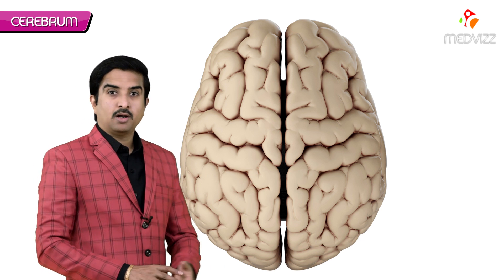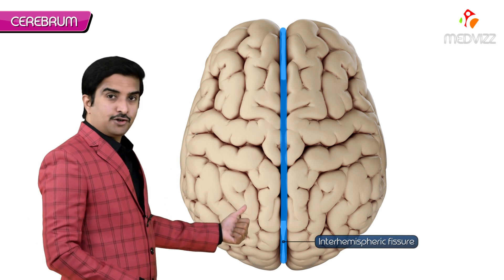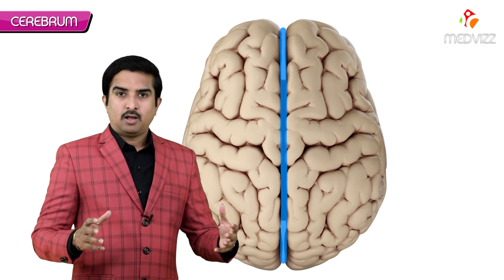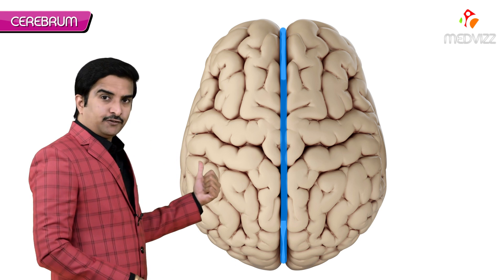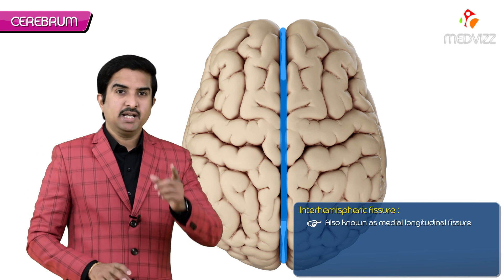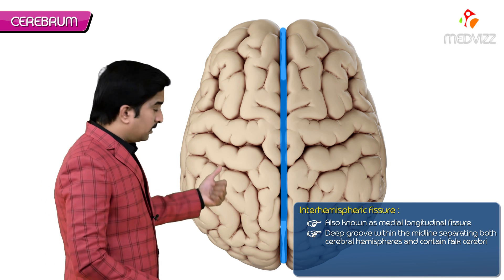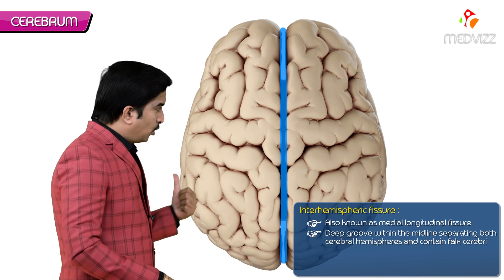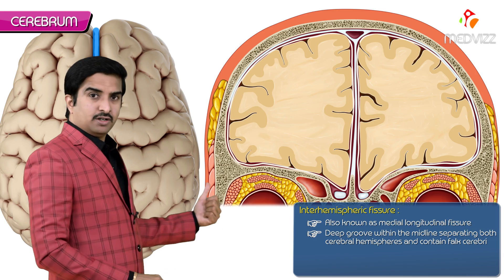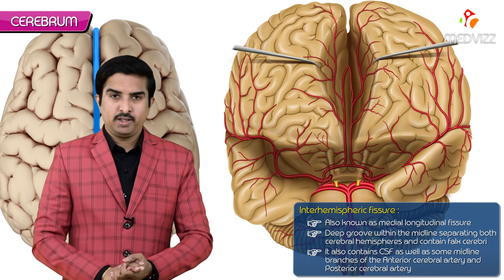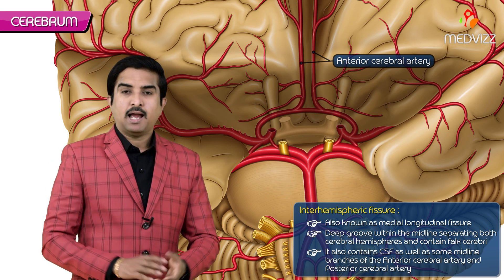The two cerebral hemispheres are divided in the mid-sagittal plane by the interhemispheric fissure, together filling almost the entire volume of the cranial cavity. This interhemispheric fissure is also known as the medial longitudinal fissure — a deep groove in the midline separating both cerebral hemispheres and containing the falx cerebri. Being a fissure, it also contains cerebrospinal fluid as well as some midline branches of the anterior cerebral artery and the posterior cerebral artery.